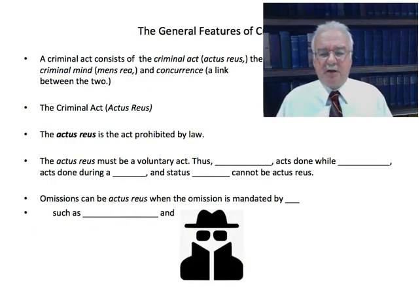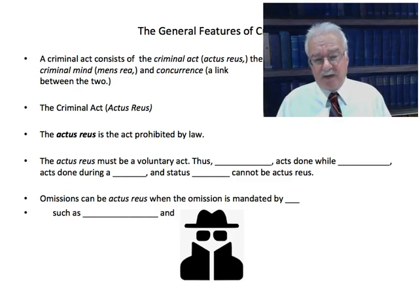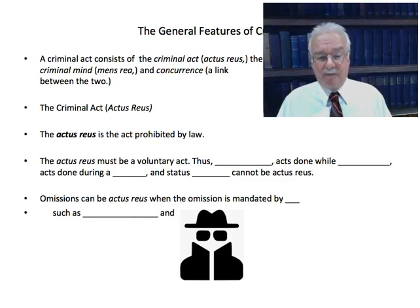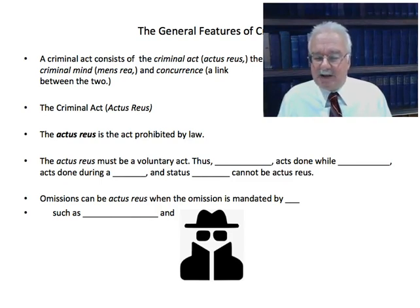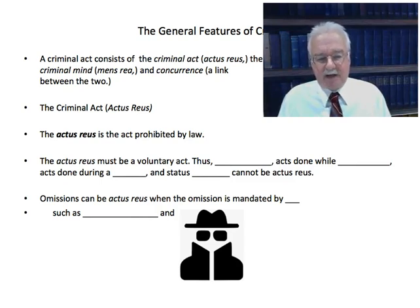Let's talk about the general features of crime. A criminal act consists of the criminal act — in Latin called the actus reus — and the criminal mind — in Latin called the mens rea — and there also has to be concurrence, a link between the two. The actus reus is the act prohibited by law. So stealing is the actus reus of larceny, causing physical injury to another is the actus reus of assault, and killing a person is the actus reus of murder.